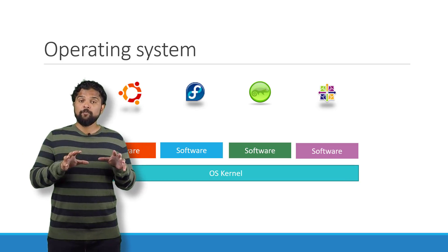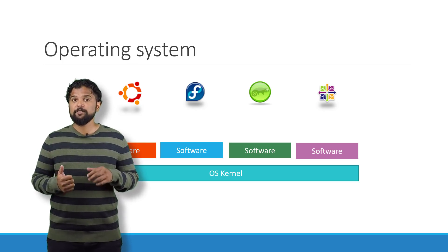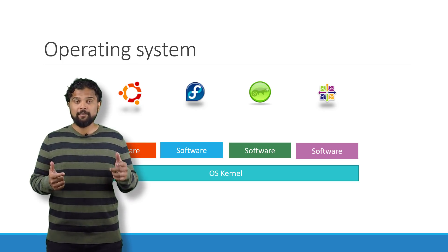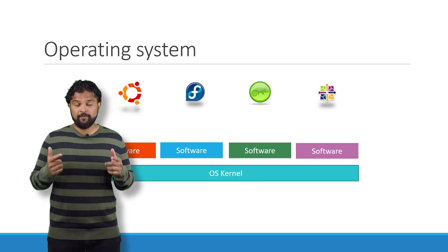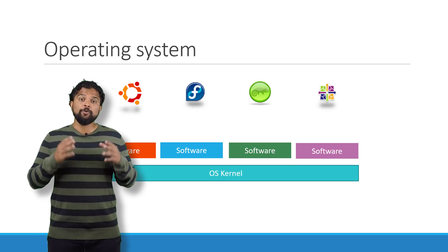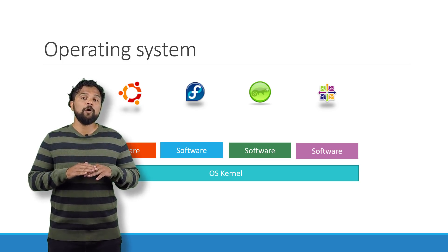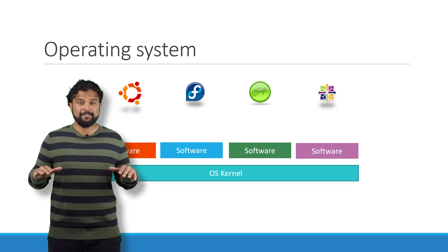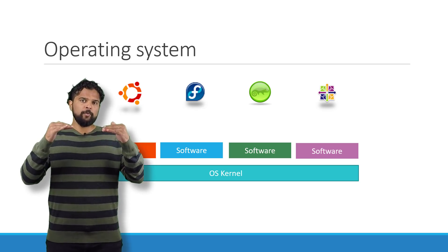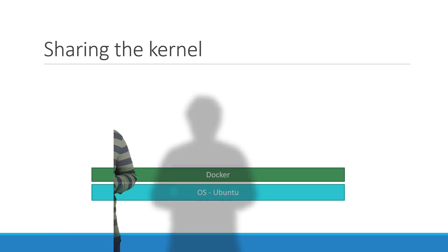This software may consist of a different user interface, drivers, compilers, file managers, developer tools, etc. So you have a common Linux kernel shared across all operating systems and some custom software that differentiates operating systems from each other.